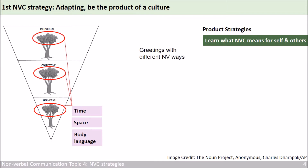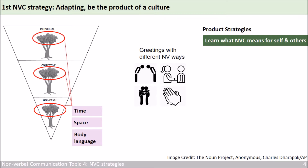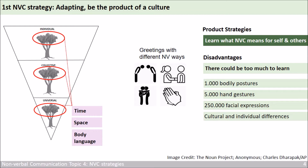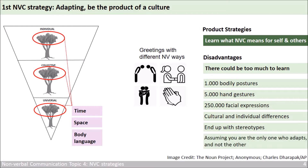Take greeting as an example. Some bow, some shake hands, some kiss, some put their hands in front of their chest, like Thai people. The problem is, there could be too much to learn. There are about 1,000 body postures, 5,000 hand gestures, 250,000 facial expressions — let alone cultural and individual differences. The biggest disadvantage is that you may end up using stereotypes, assuming you are the only one who adapts and not the other.